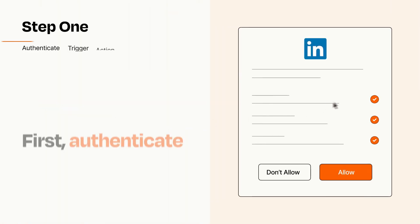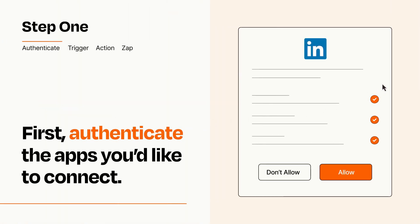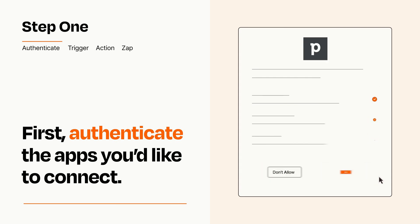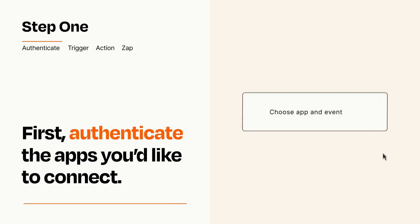It's easy. To get started, you'll just need to authenticate your apps, which takes just a few seconds. Zapier meets industry standards for encryption when connecting with each of your apps.